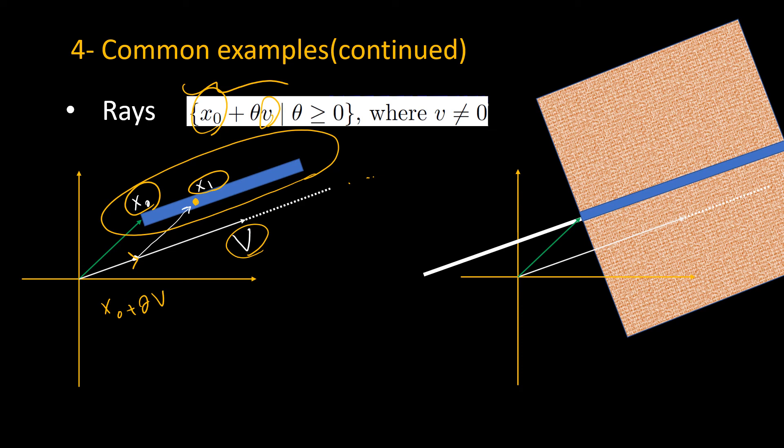Now you may ask how one can represent a ray using a polyhedron notation. The answer is, for this blue ray here, we can draw this white line, and now we can define a half space that covers this blue ray. Therefore, the intersection that we get is the blue ray. Notice that a ray is not a bounded set.